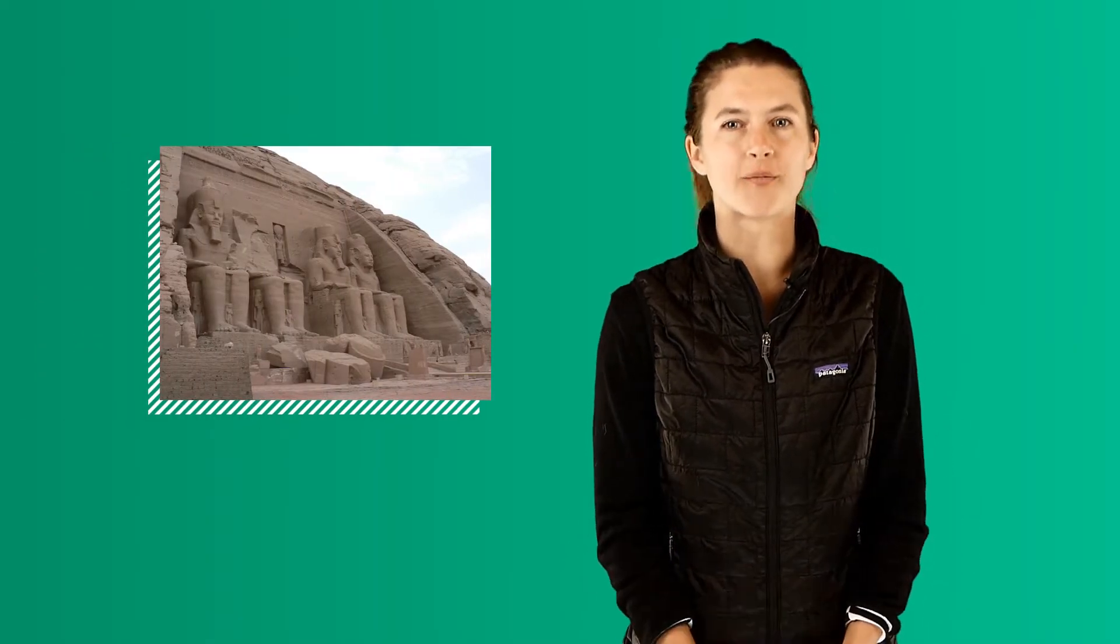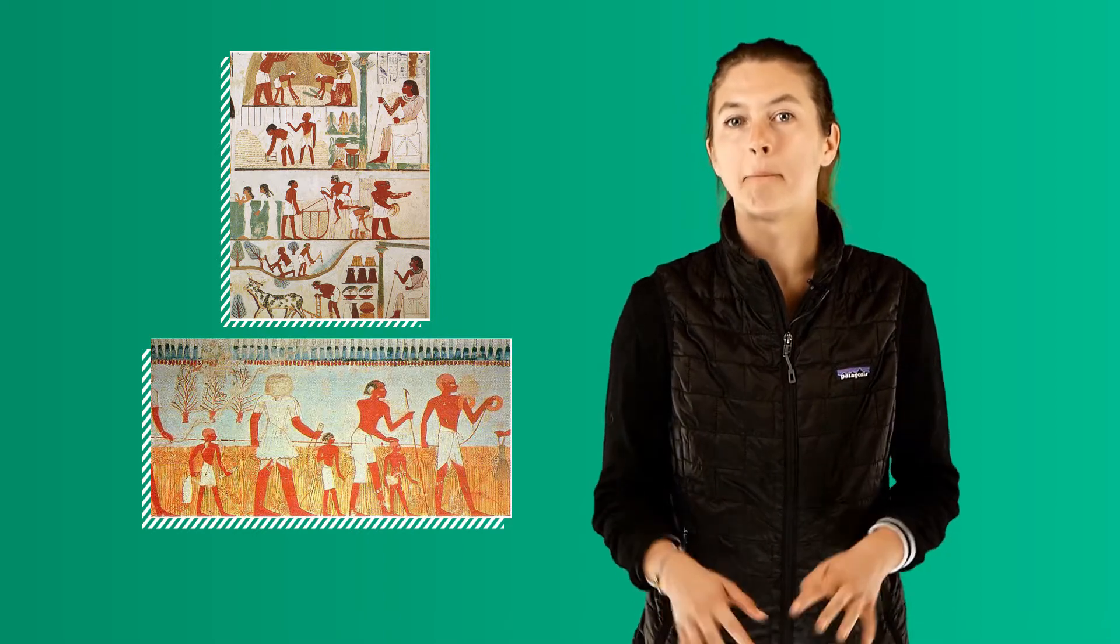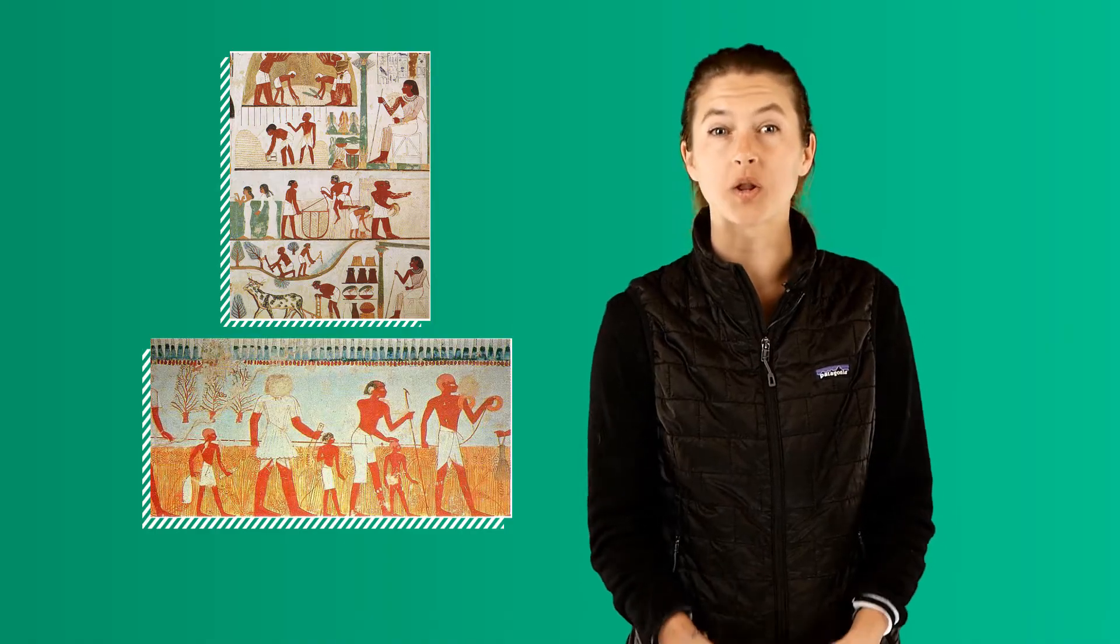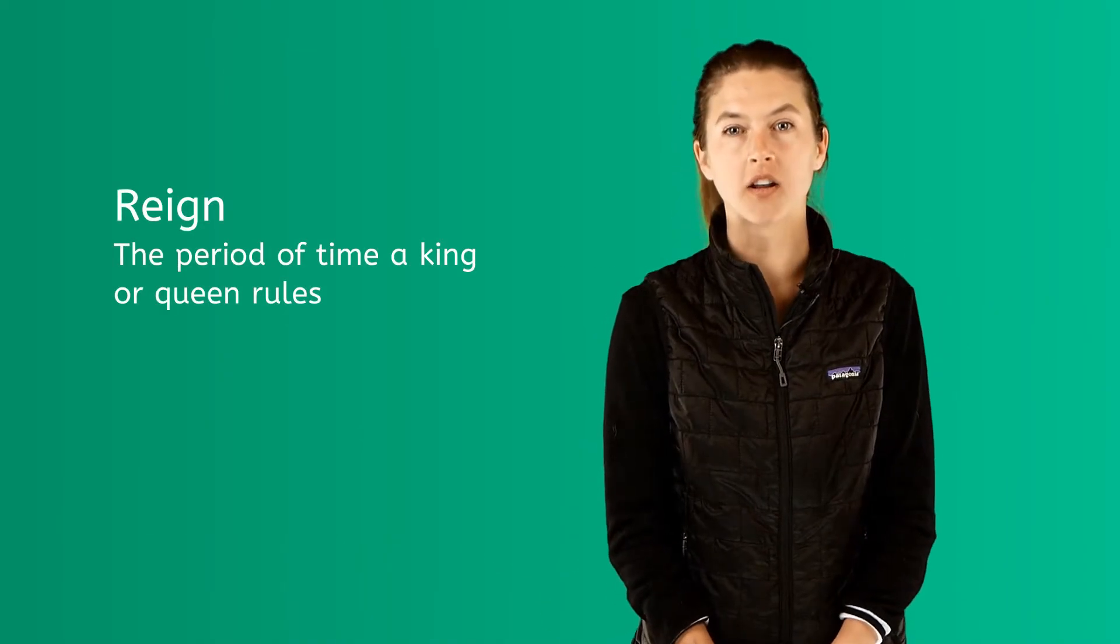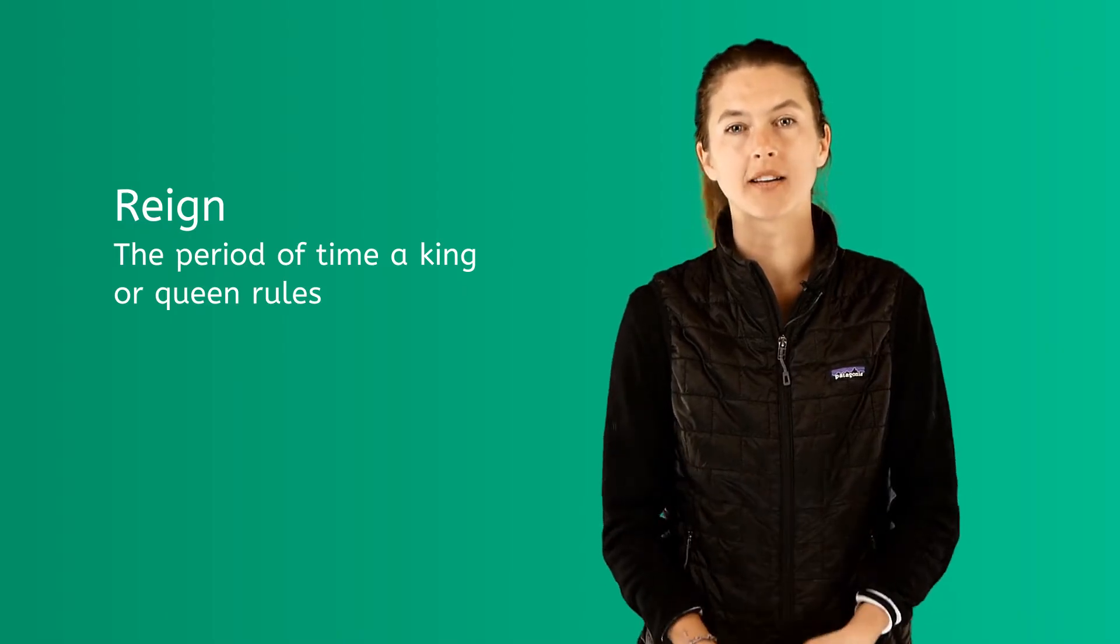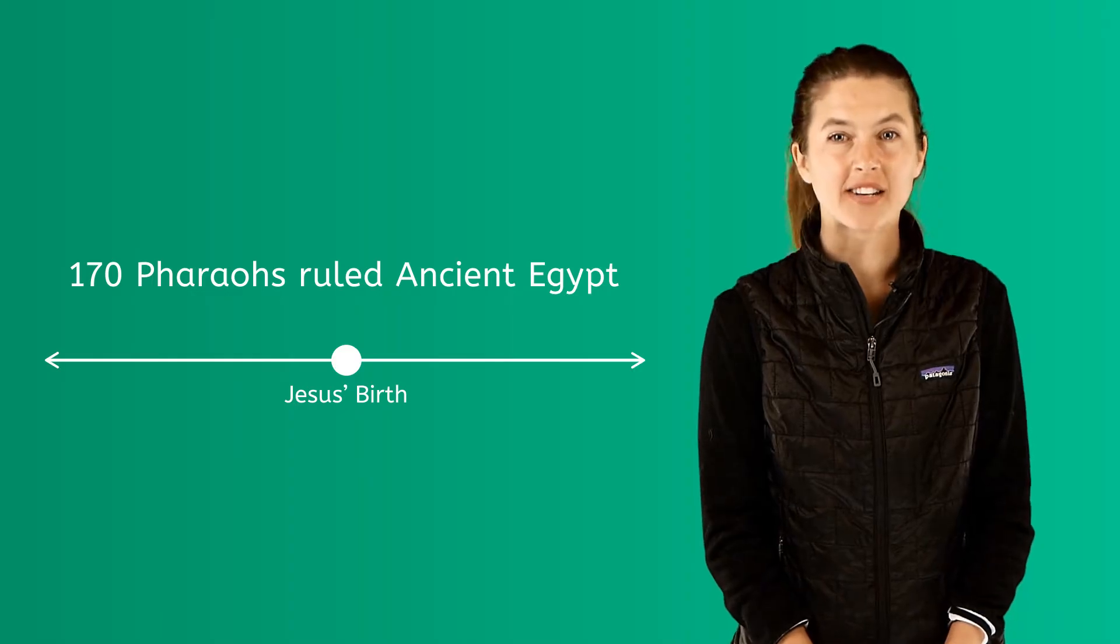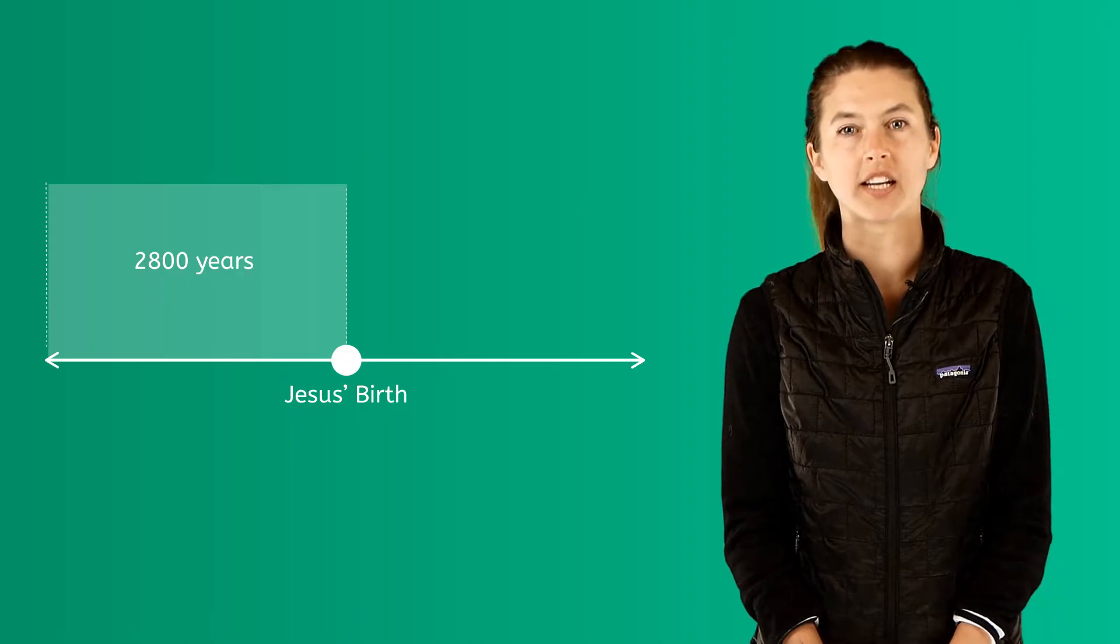These tombs give modern archaeologists a lot of information about how the pharaohs lived, ruled, and died. Many times great battles and other historical events were carved into the walls of the tomb to show off a pharaoh's impressive reign or time they ruled in history. Approximately 170 pharaohs ruled ancient Egypt over its 2,800-year history.